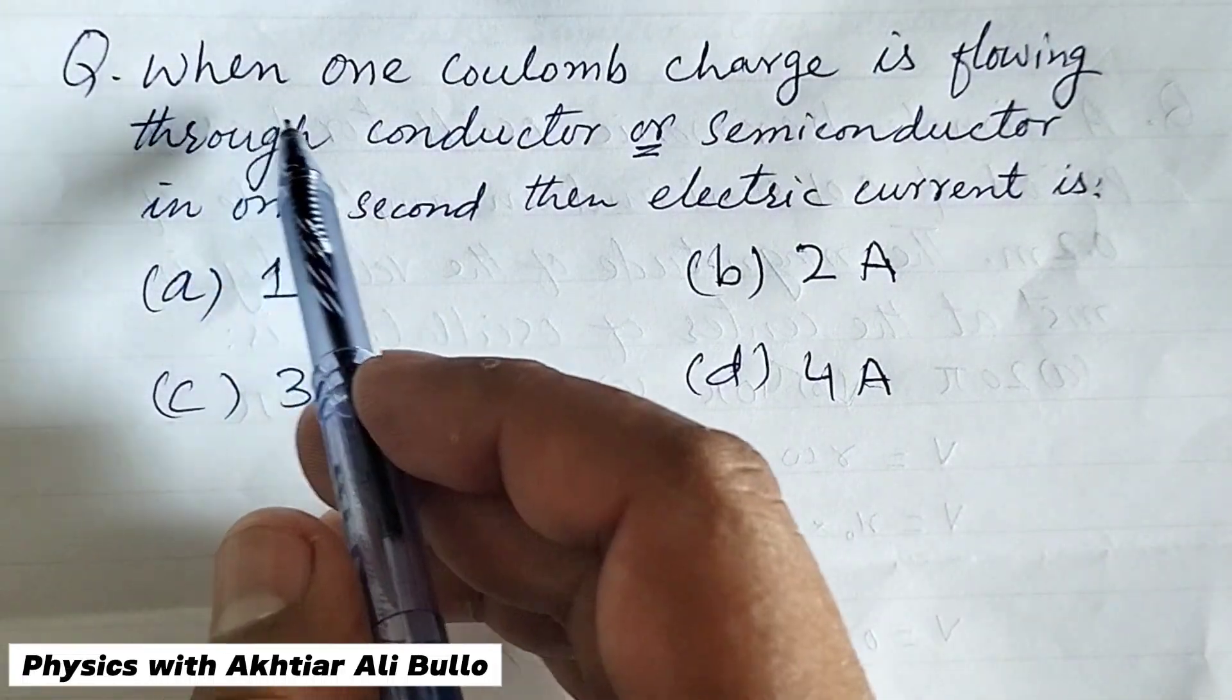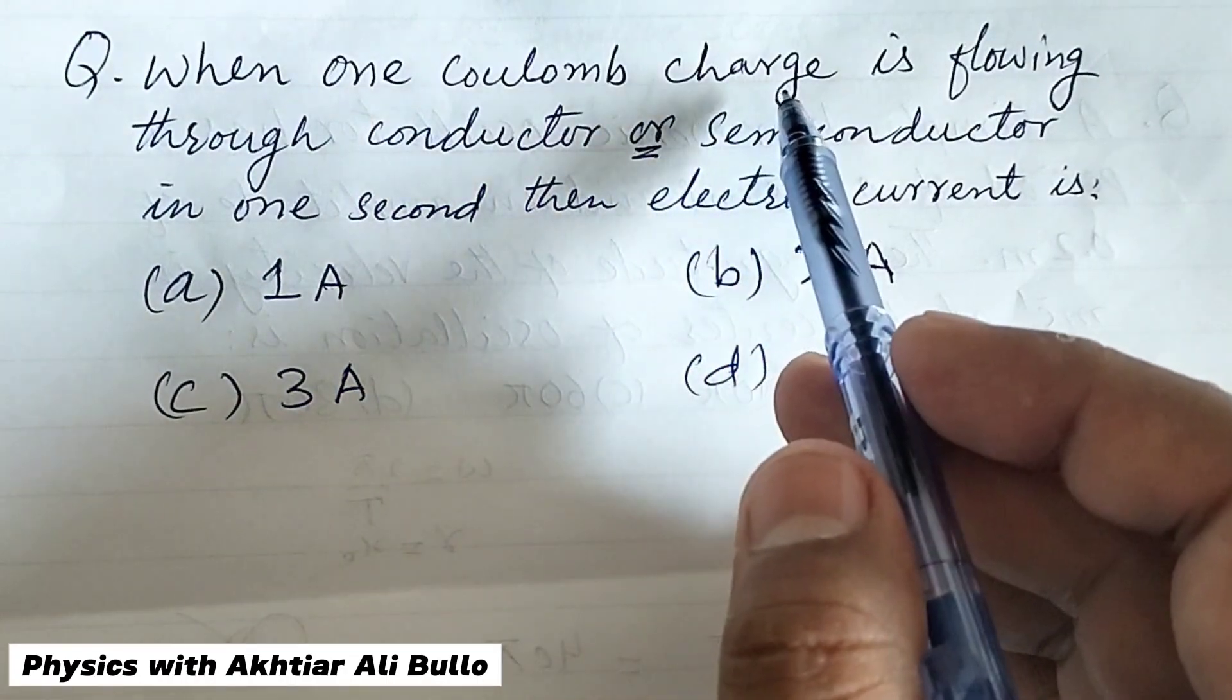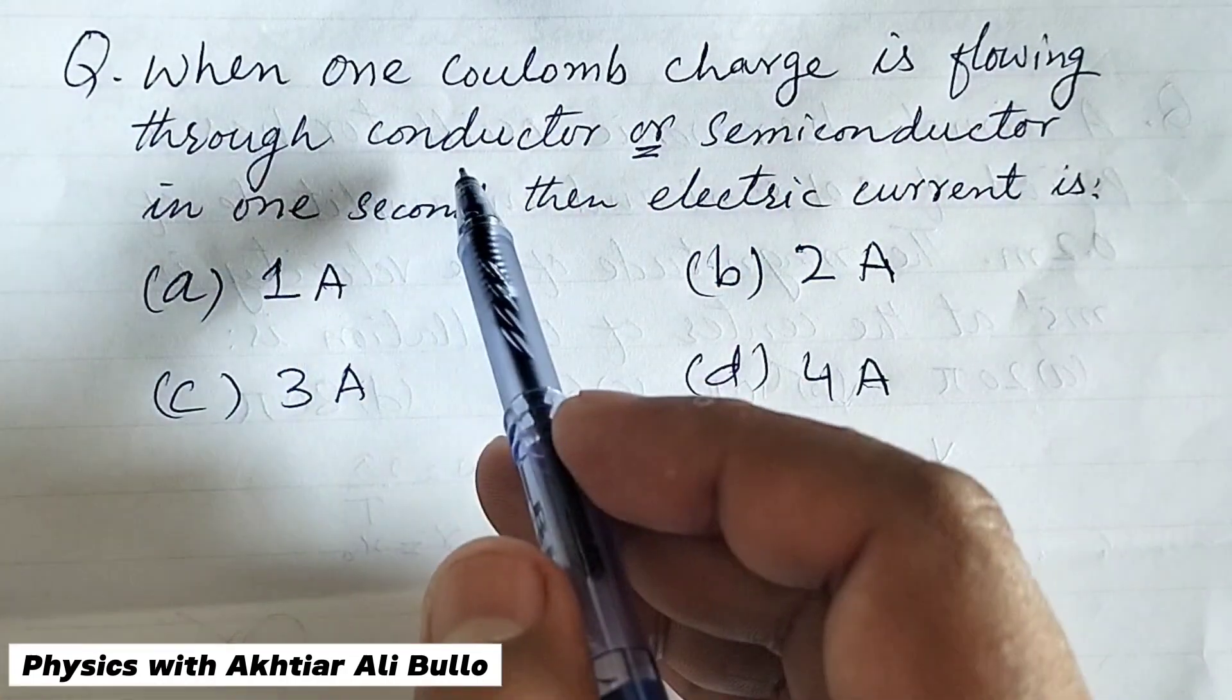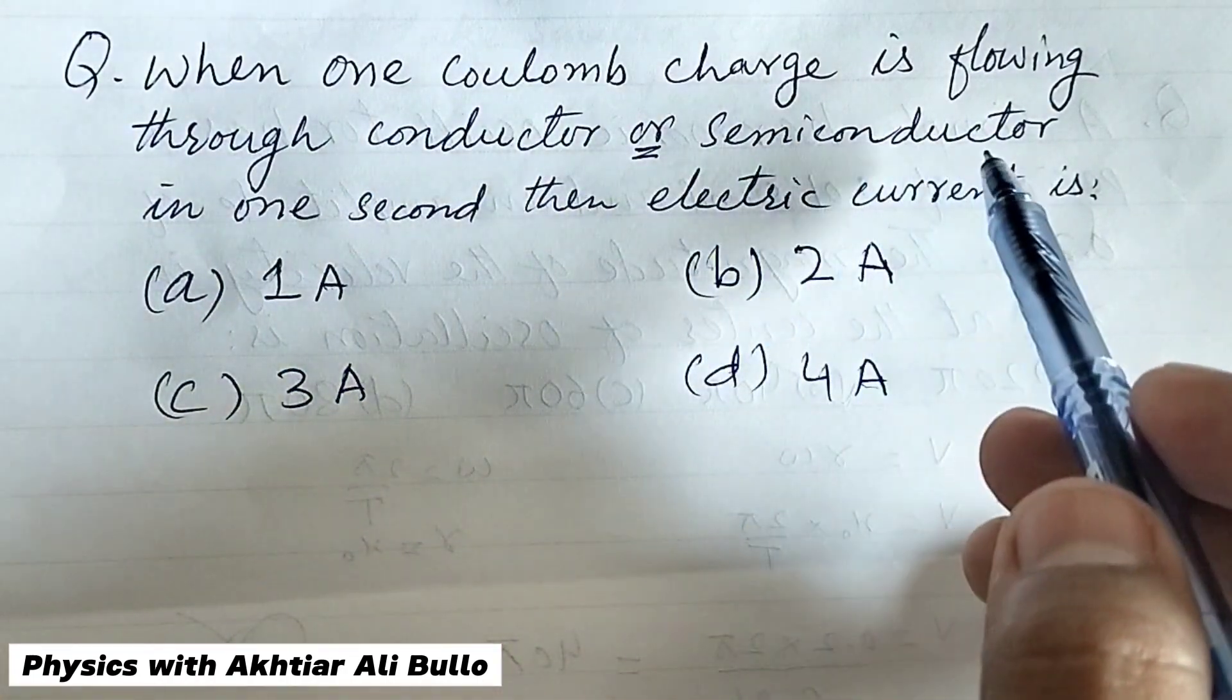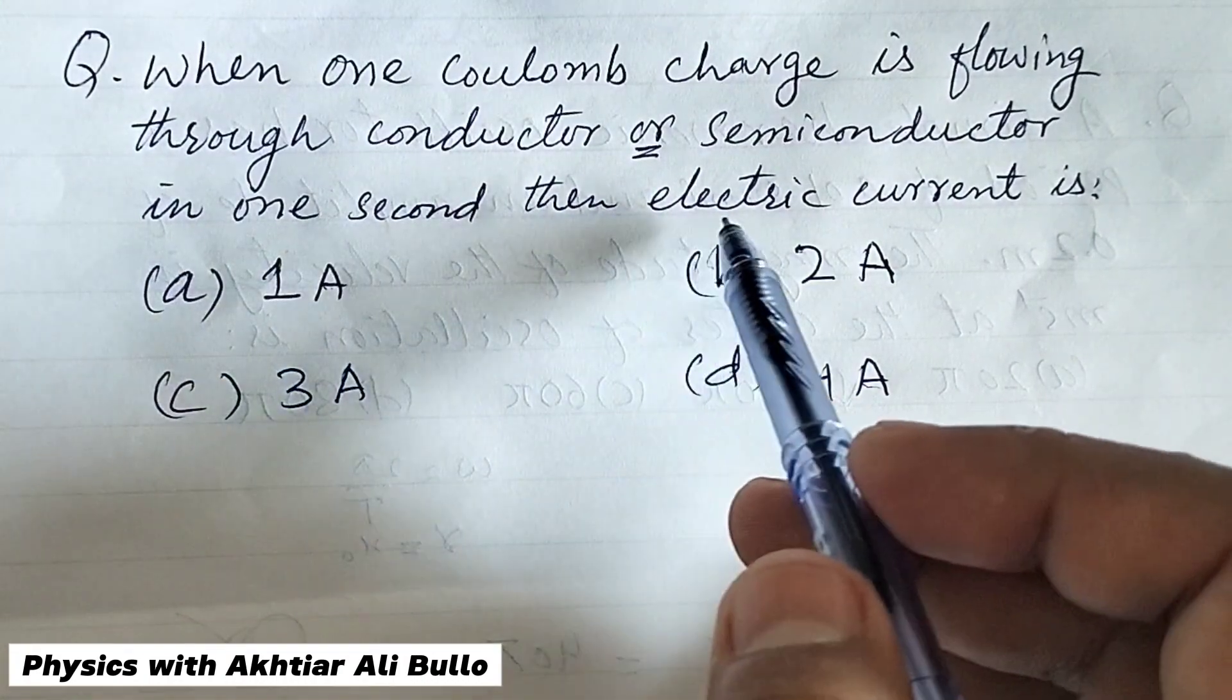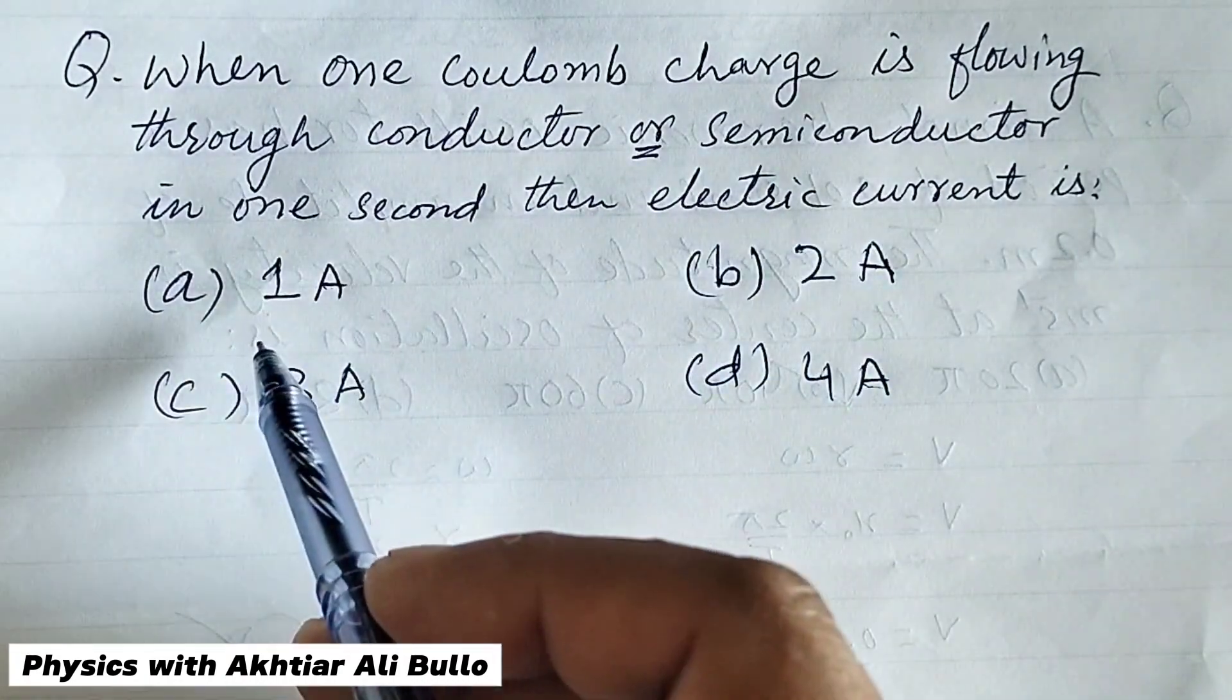The question is, when one Coulomb charge is flowing through a conductor or semiconductor in one second, then electric current is